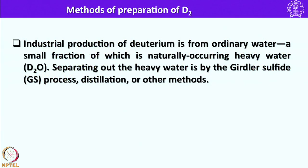Now let me discuss the method of preparation of deuterium or deuterium compounds such as water D2O, also called heavy water. Industrial production of deuterium is from ordinary water — the ocean consists of 99.9% H2O and 0.02% D2O. This is the major source of D2O, and separating heavy water from ocean water is carried out by two methods: the guerrilla sulfide process and distillation, among others.